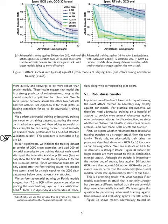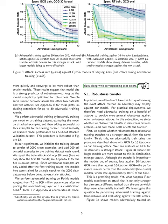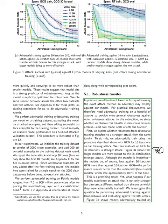We conduct adversarial training on Pythia models that range from 7.6 million to 909 million parameters after replacing the unembedding layer with a classification head. In practical situations, we often do not know the specific attack method that an adversary might use against our model. Therefore, for real-world applications, we need to conduct adversarial training on several attack types to ensure more general robustness against unexpected attacks. We investigate whether we can observe a transfer of robustness between different attacks and how model size influences this transfer.